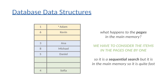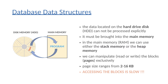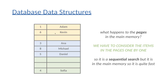If we have a database table with rows like Adam, Kevin, an empty row, Anna, Michael, Daniel, and Sophia, we are not able to manipulate just a single row — we have to deal with pages exclusively, ranging from 2 to 16 kilobytes. For demonstration purposes, let's assume 3 rows of the database table form a given page. Whenever we fetch a page from external memory into internal memory, we deal with 3 rows: the first 3 rows as page one, the next 3 as page two, and so on.